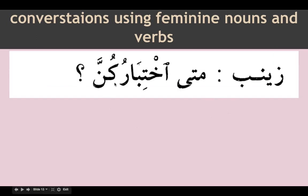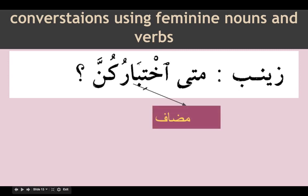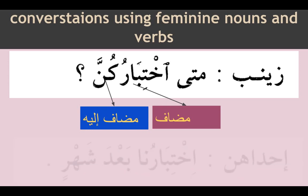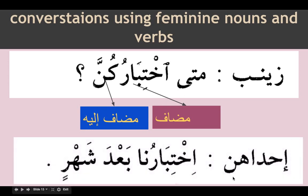Zainab asks: mata ikhtibaru kunna — when is your examination? Ikhtibar means examination. Mata means when. Ikhtibaru is mudaf and kunna is mudaf ilaihi. One of them says: ikhtibaruna — using the attached pronoun na for nahnu. Ikhtibaru is mudaf and na is mudaf ilaihi — our examination. Ba'da shahrin — after a month. Ba'da is zarf, shahrin is mudaf ilaihi.